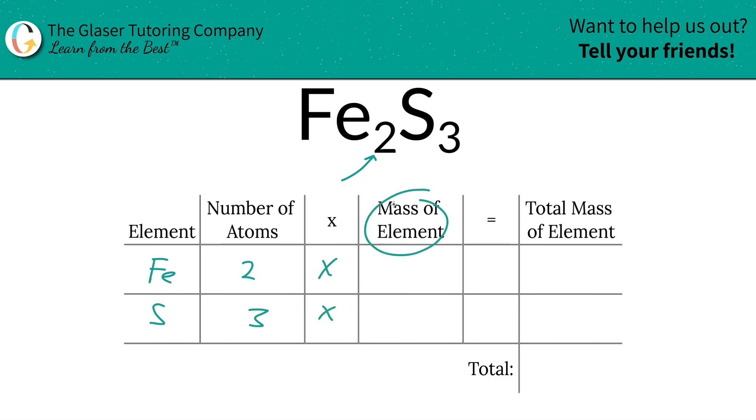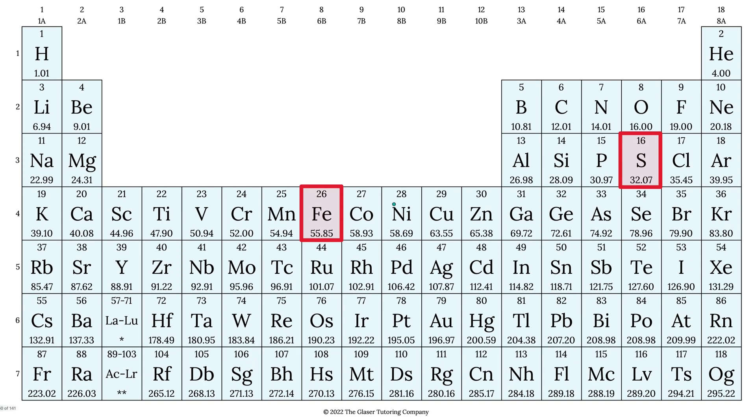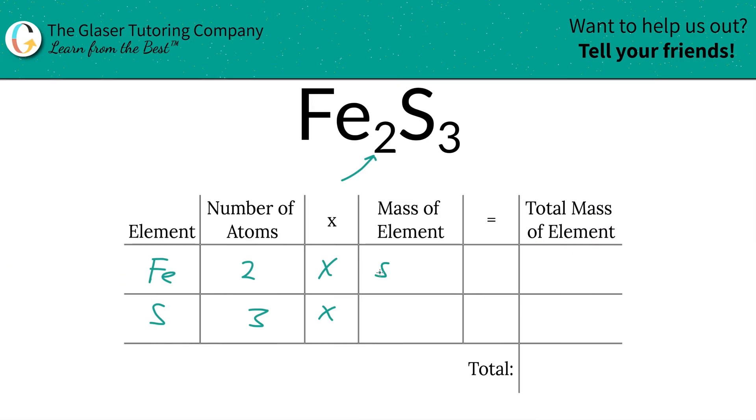Then we're going to take those number of atoms and multiply it by the mass of each particular element. Those masses are found on the periodic table. So iron is 55.85 and sulfur is 32.07. So we're going to write them in.